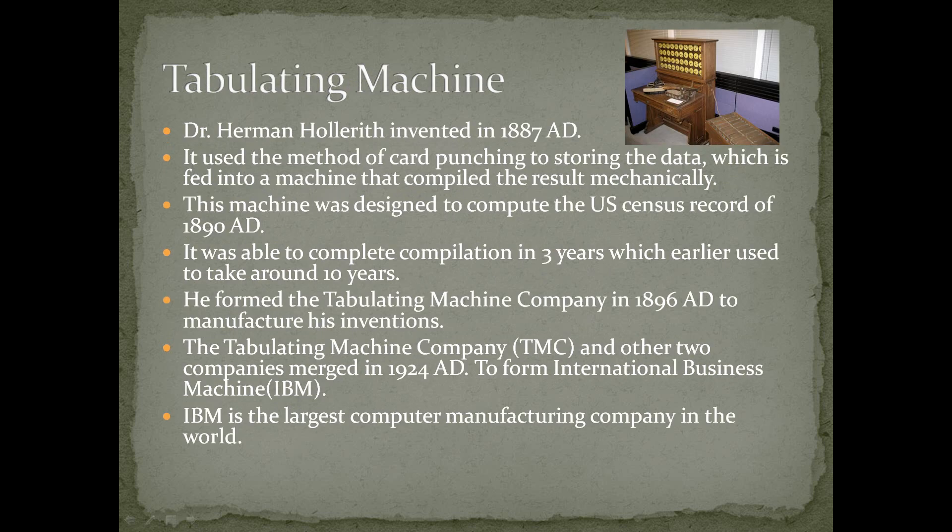The tabulating machine was invented by Dr. Herman Hollerith in 1887 A.D. It used the method of card punching to store the data, which was fed into a machine that compiled the result mechanically. This machine was designed to compute the U.S. census record of 1890 A.D., and it was able to complete compilation in three years, which earlier used to take around 10 years. He formed the Tabulating Machine Company in 1896 A.D. This company and two others merged in 1924 A.D. to form International Business Machines, IBM, which is the largest computer manufacturing company in the world today.